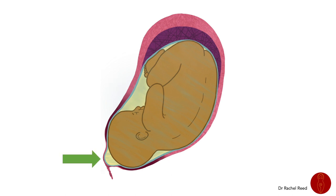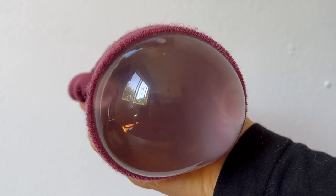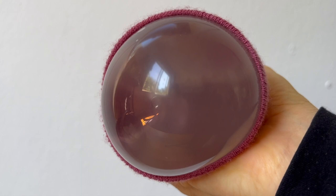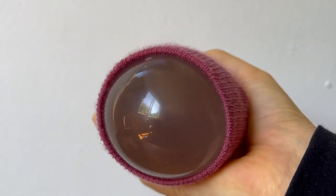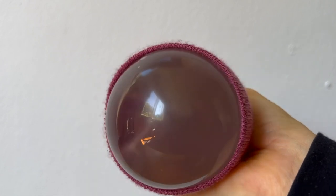The pressure of a contraction will squeeze the amniotic sac, making the fluid in front of the baby's head bulge through the cervix — the forewaters — and this stretches the cervix open. Remember from previous lessons that the cervix doesn't open so much as it is pulled up over the baby's head. This bulging of the amniotic sac through the cervix presses it open to help stretch it during a contraction.